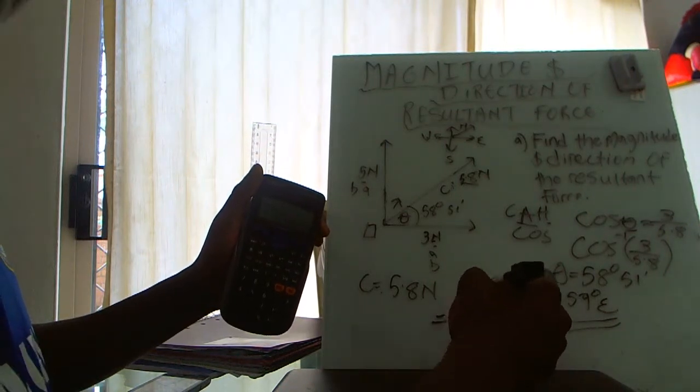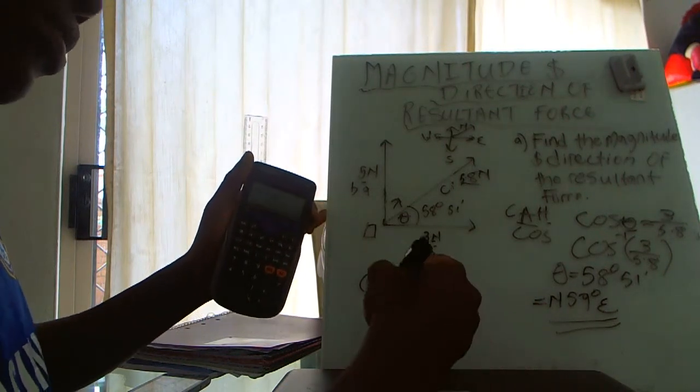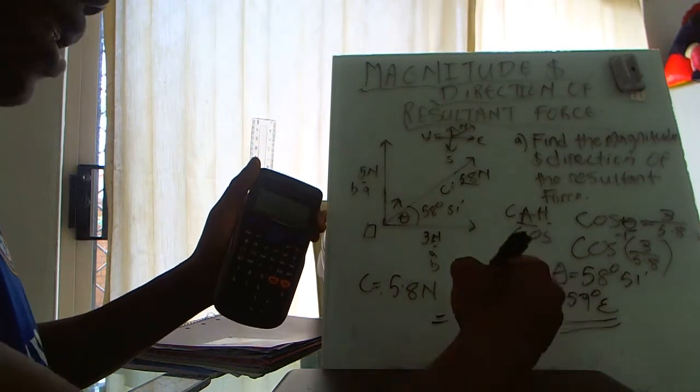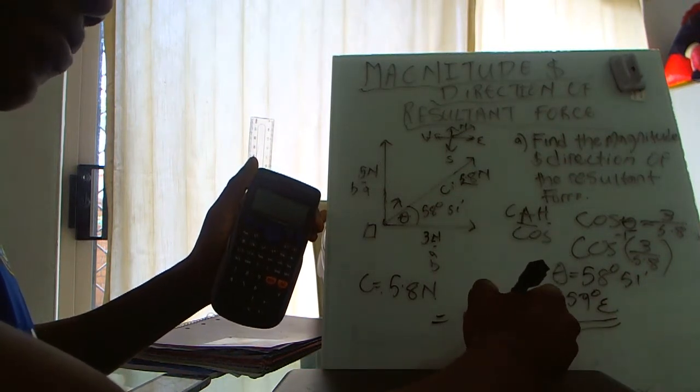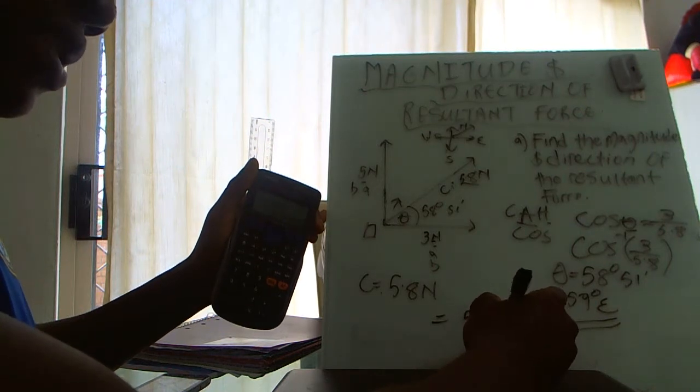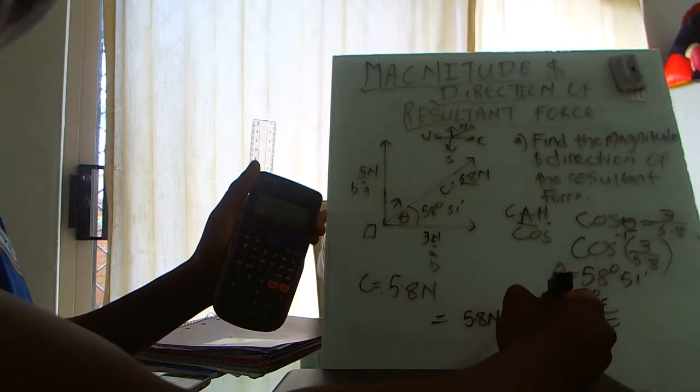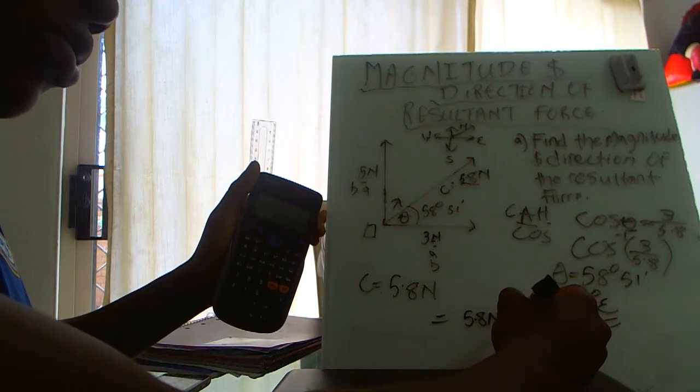So at the end of the day, your final answer: the magnitude and direction is 5.8 newtons and the direction is north 59 east.